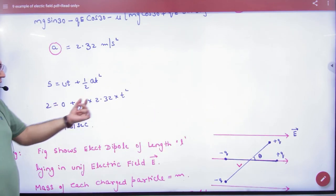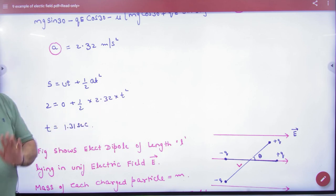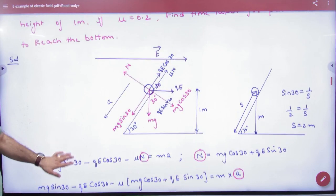Using S equals 0 plus half a t squared. Time you have to find. But I don't know acceleration. Acceleration, if I find this one, my answer will come. Acceleration is from free body diagram, laws of motion.